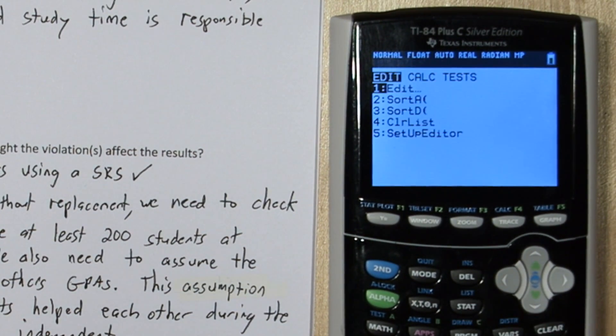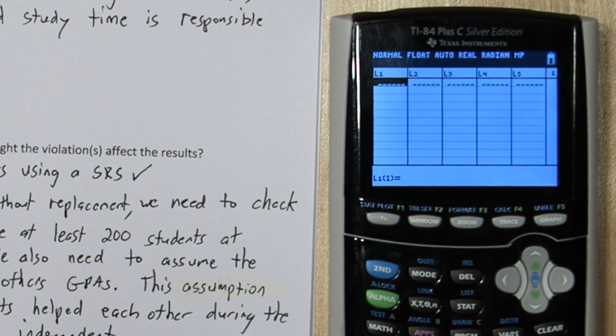To do this, press the stat button, and press enter. These are our lists, and we're going to type the GPAs into list 1.